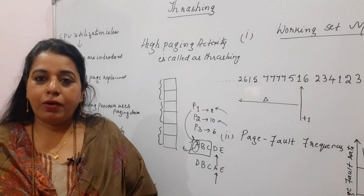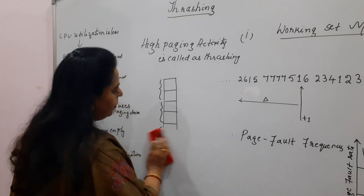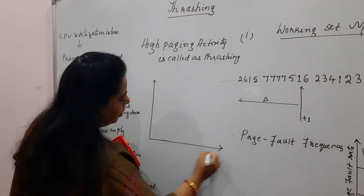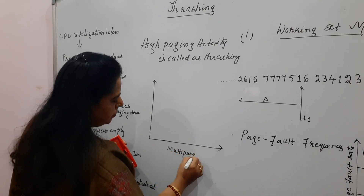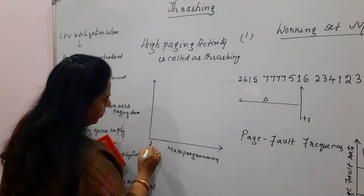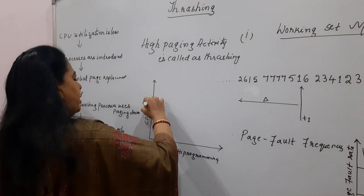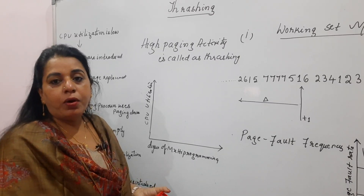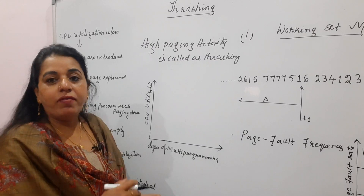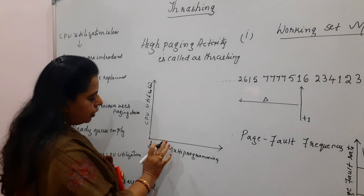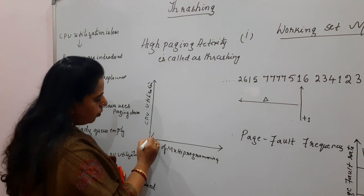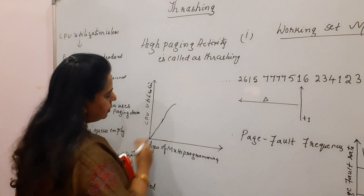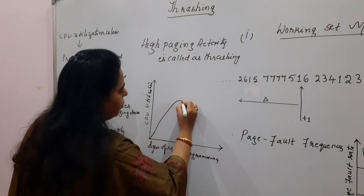If you plot CPU utilization versus degree of multiprogramming, the graph appears in this manner. On the x-axis write 'Degree of Multiprogramming' — the number of programs in main memory for execution. On the y-axis write 'CPU Utilization.' As the degree of multiprogramming increases, CPU utilization also increases. If more programs are in main memory, there is a higher degree of multiprogramming.